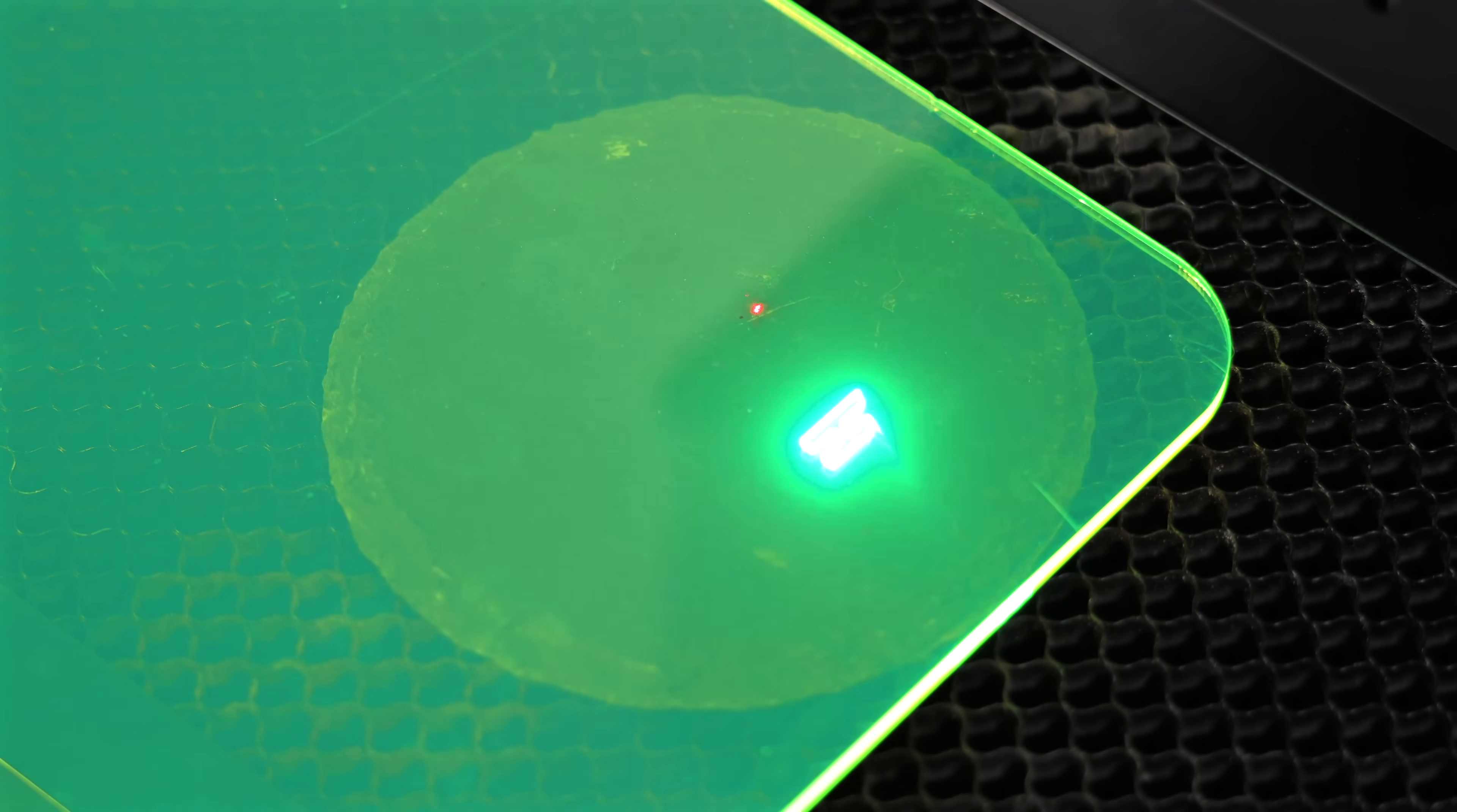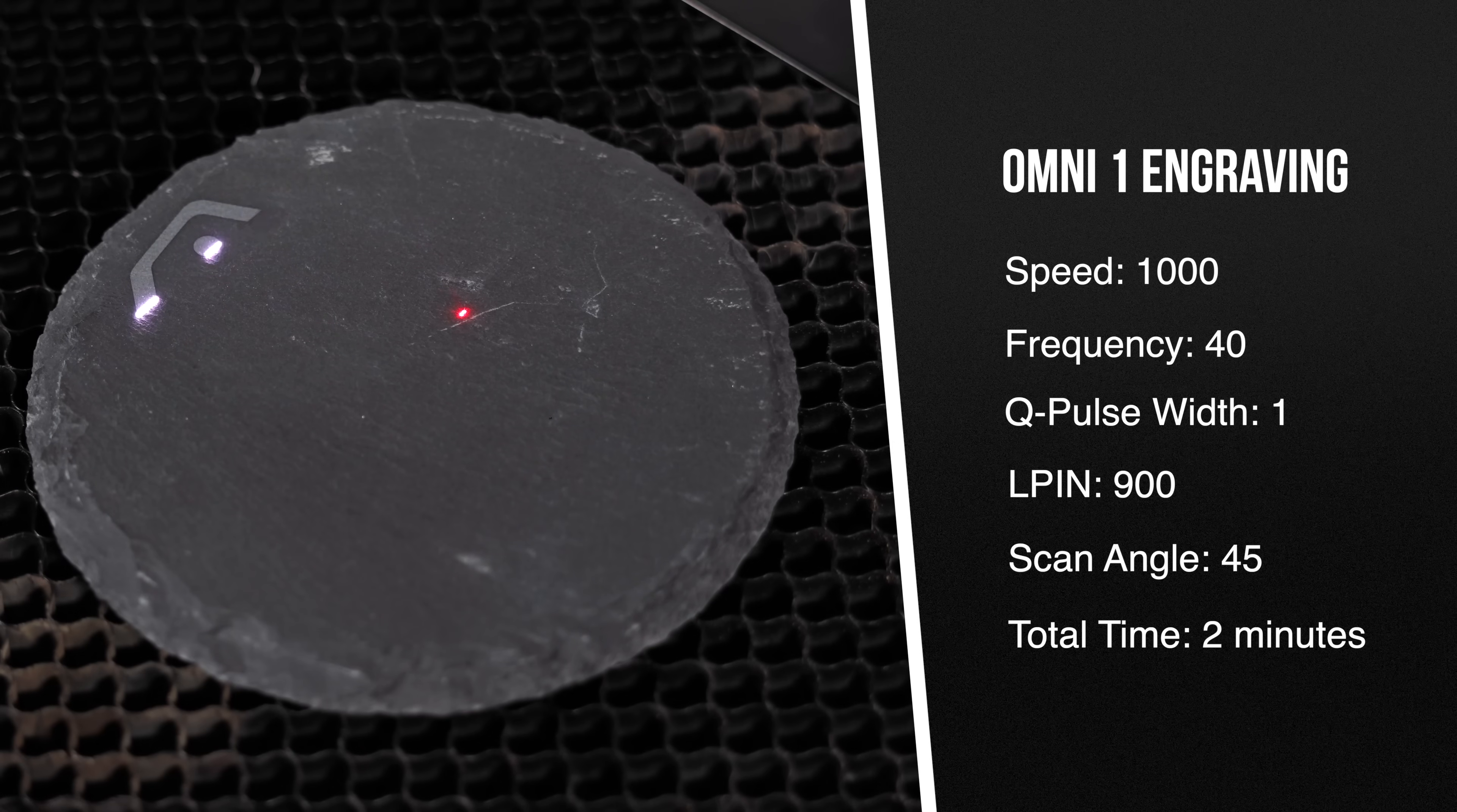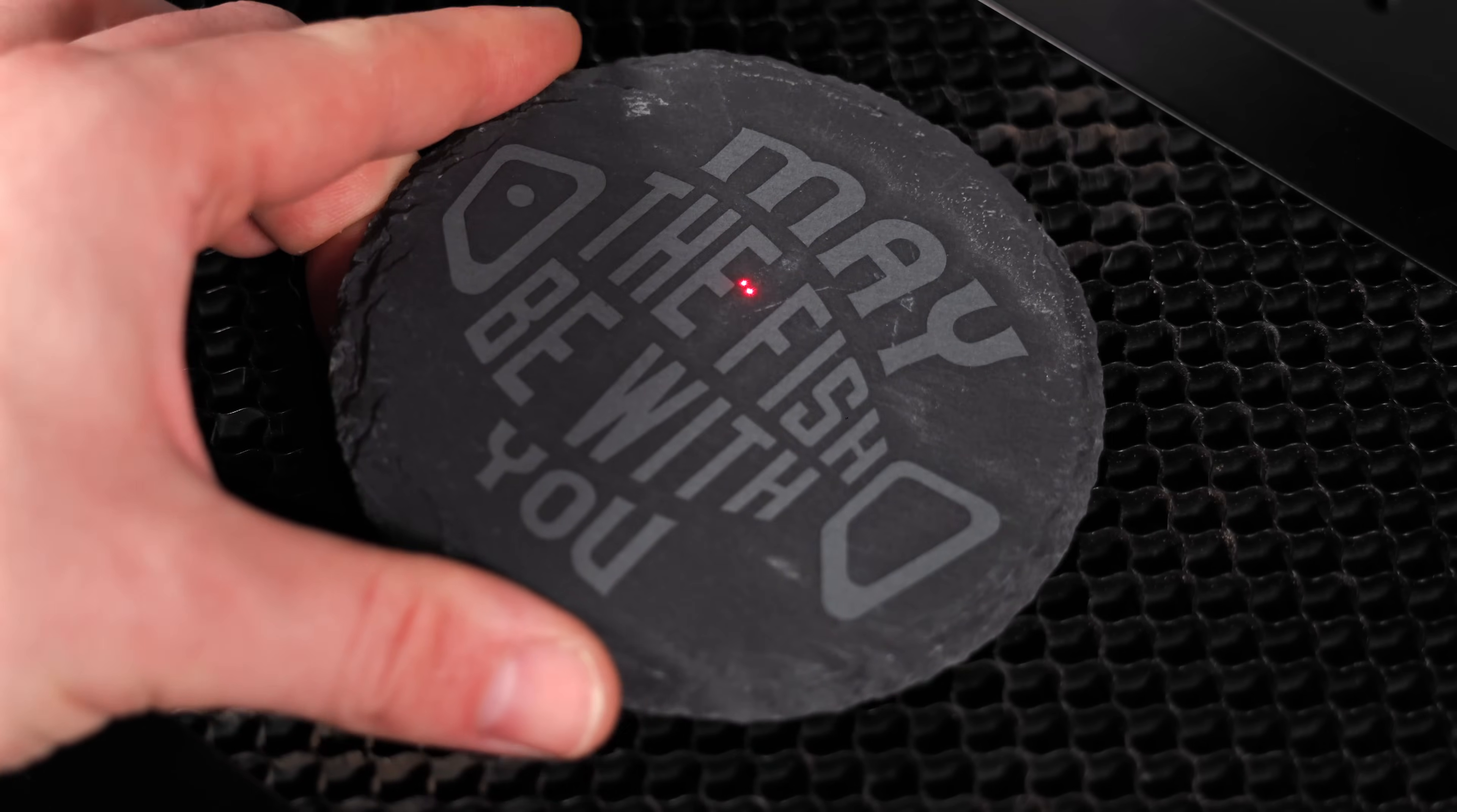Slate and other stones also perform exceptionally well with the Omni one. Unlike some lasers that only mark the surface, this UV laser can achieve a deeper engraving, giving your projects added depth and detail. As soon as the engraving begins, you'll notice some stone dust coming off the top, a good sign that the laser is cutting into the material effectively. The results were impressive, but we're going to continue tweaking the settings to see if we can achieve an even brighter, crisp white finish.